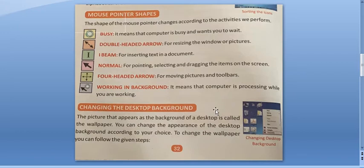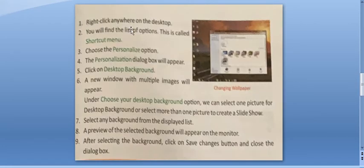So next is mouse pointer shapes. These are the shapes the mouse pointer changes according to the activities we perform. Now this circle shows busy. It means that computer is busy and wants you to wait. Now double headed arrow for resizing the window or picture. Eye beam for inserting text in a document.